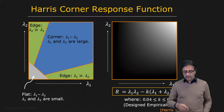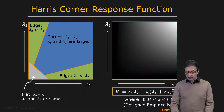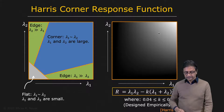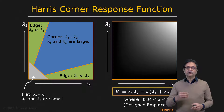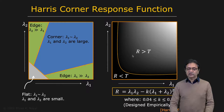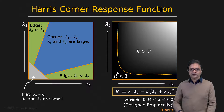The Harris corner detector provides a simple way to do this classification. Harris maps lambda 1 and lambda 2 to a single number R using the formula: R = lambda 1 × lambda 2 − k × (lambda 1 + lambda 2)², where k is empirically determined. R is plotted as an image where brightness is proportional to R. Applying a threshold to R — where R above the threshold means corner — corresponds to a curve in lambda 1, lambda 2 space.